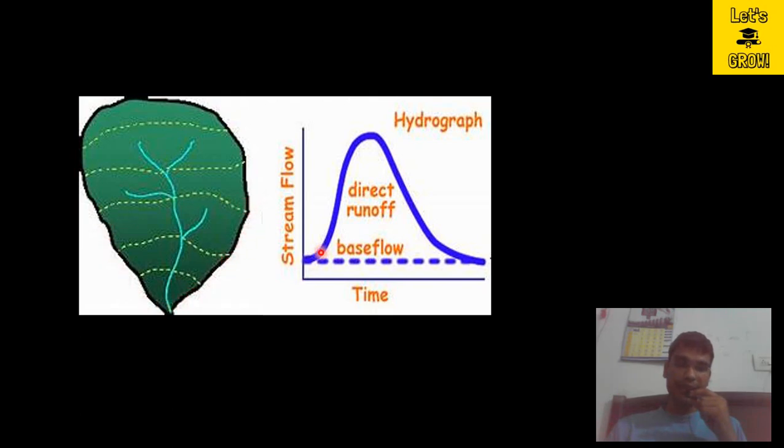The discharge will further increase. Later on, this much area is going to contribute, and the discharge will increase and attain some peak. As the rainfall event stops, it will decrease with respect to time. Here, time of concentration is that time which is traveled by the water from the remote point—let's say this is the remote point or the farthest point of this catchment.